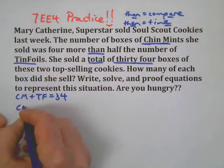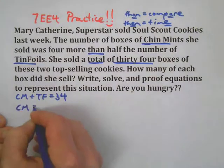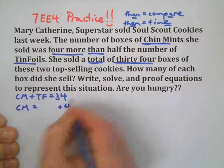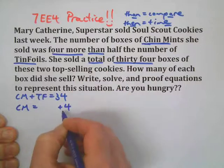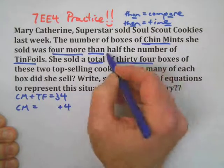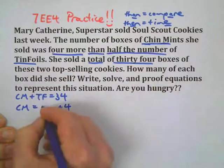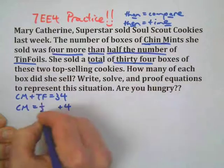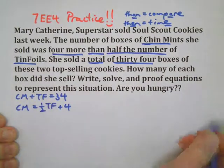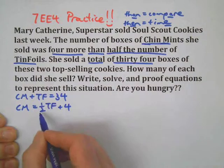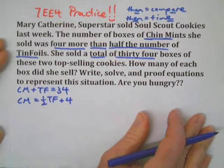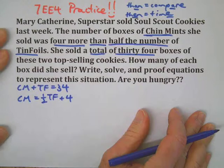The number of Chin Mints was four more than — since we're comparing, the comparison has to come after the quantity — half the number of Tin Foils. You can write that as 0.5 or as TF over 2. I'm going to write it as TF over 2.